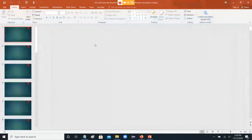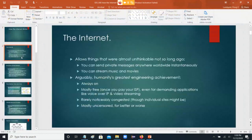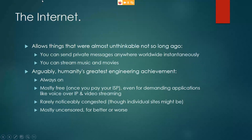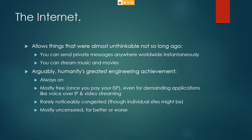So this is how the internet works — we'll talk about some of the big picture details. The internet allows things that were almost unthinkable not so long ago. Back in the early 90s, I'd heard of the internet and knew people that did things with it, but didn't have access to it myself. So you can now send private messages anywhere worldwide almost instantly. That was a big change in how the world worked.